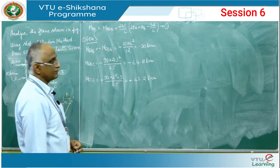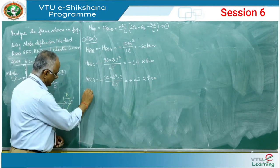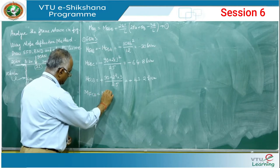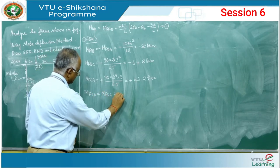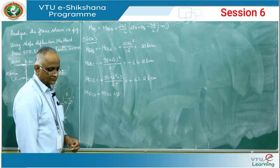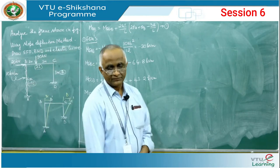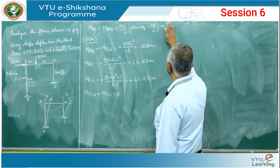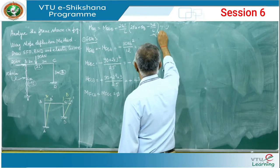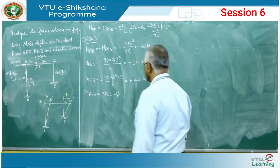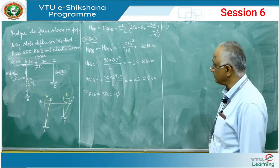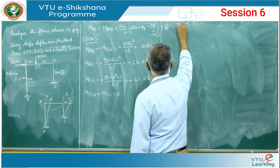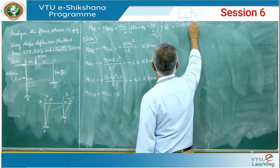For member CD, which carries no load, M_f_CD = M_f_DC = 0. These zero values must still be written down explicitly because they are needed when developing the slope deflection equations.